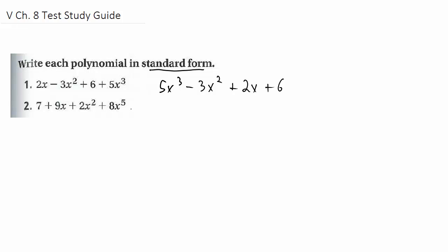Next one, same thing — standard form. It has to be in descending order, highest power first. Next highest is the second power, so that is the 2x squared. Next highest is the 9x, and finally the constant term happens to be the lowest power. Notice how there is some missing in between, but it does not matter. Highest power to lowest power is how you write in standard form.